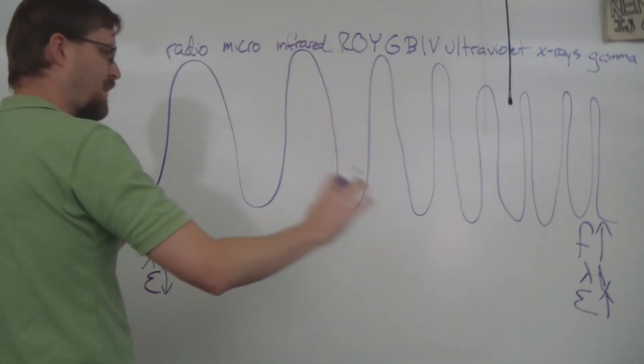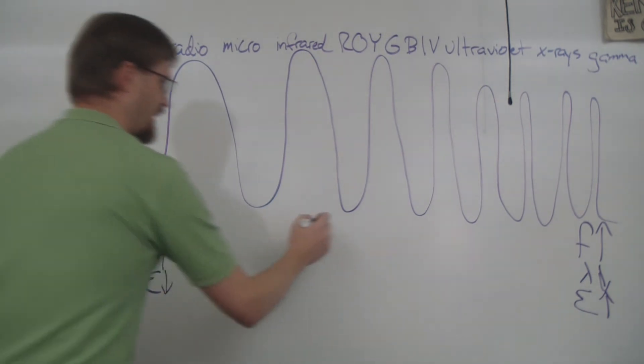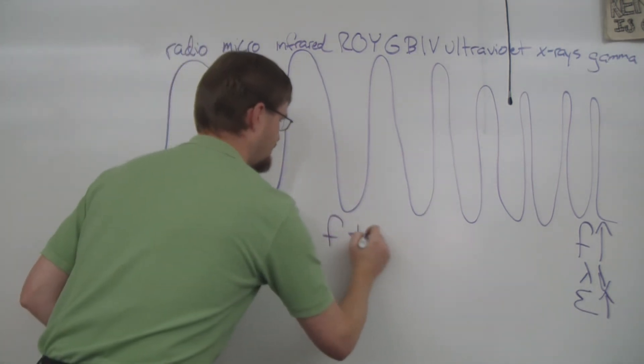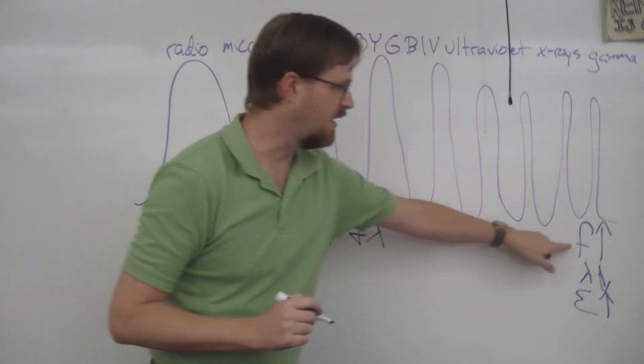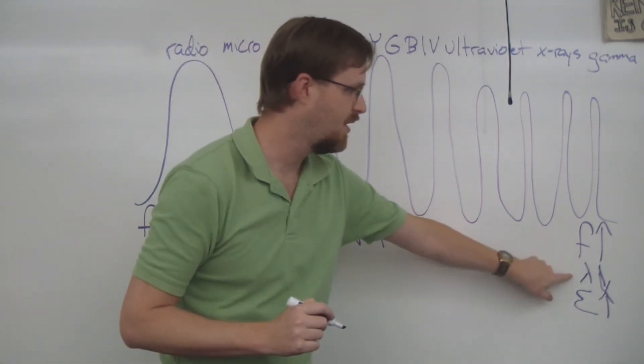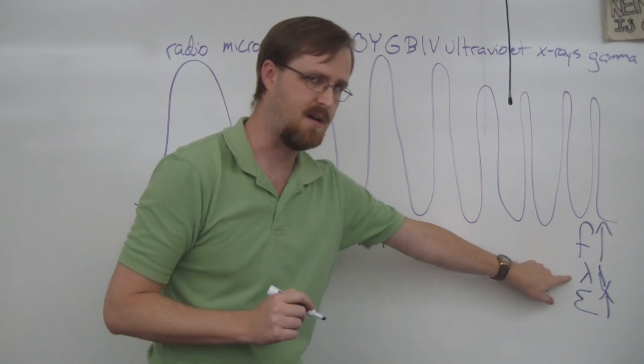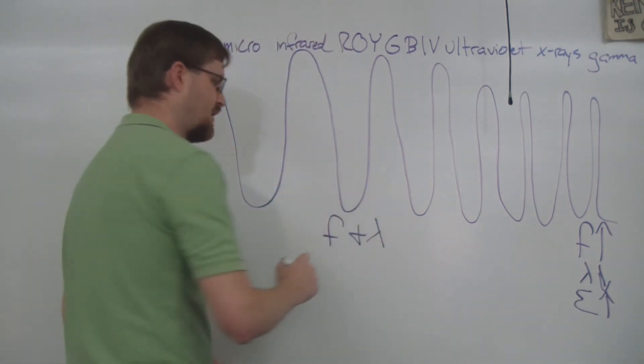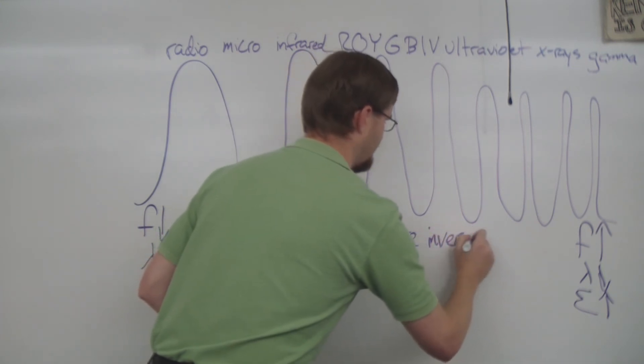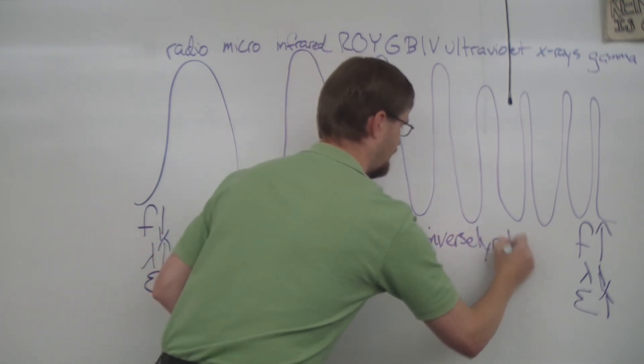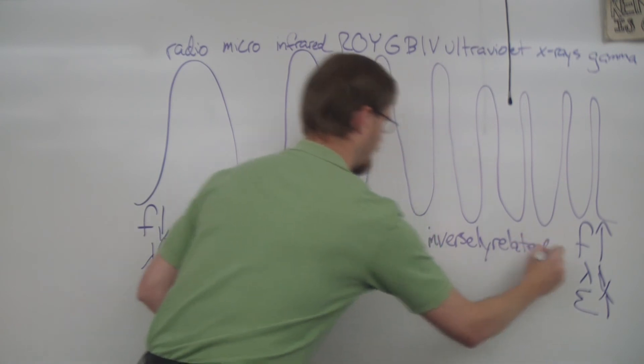So now what we need to do is compare the left to the right. We're going to start by comparing frequency and wavelength. We can see here that frequency goes up, wavelength goes down. So if they're going opposite of each other, we can say that frequency and wavelength are inversely related.